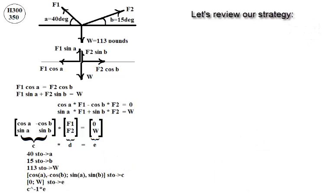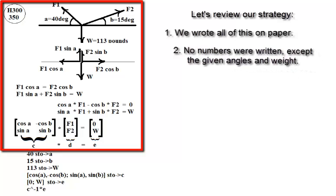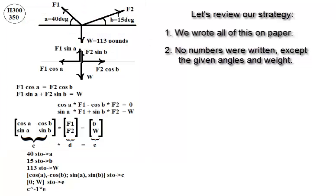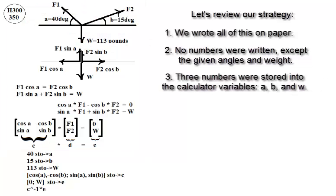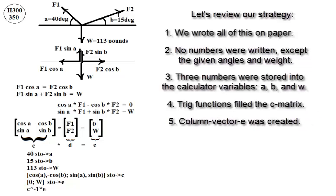Let's review our strategy. We wrote all of this on paper. No numbers were written, except the given angles and the weight. Three numbers were stored into the calculator variables A, B, and W. Trig functions filled the C matrix. Column vector E was created.